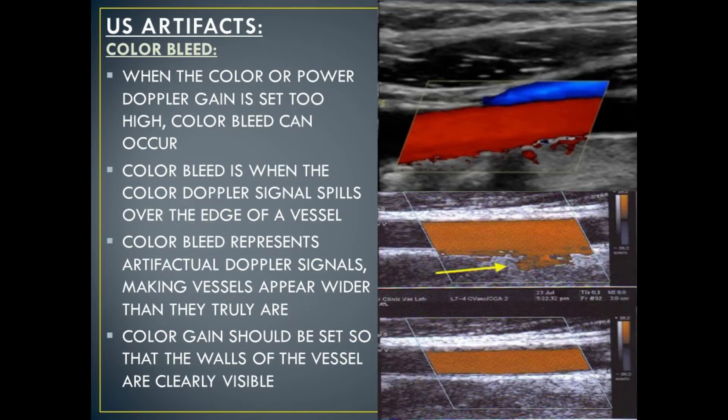The next type of Doppler ultrasound artifact is known as color bleed. When the color or power Doppler gain is set too high, color bleed can occur. Color bleed is when the color Doppler signal spills over the edge of a vessel, representing artifactual Doppler signals and making vessels appear wider than they truly are. The color gain should be set so that the walls of the vessel are clearly visible.